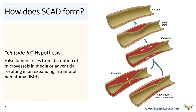How does a SCAD form? One common hypothesis is the so-called outside-in hypothesis. The idea is that there is some injury or disruption of the microvessels within the wall of the blood vessel, either in the adventitia or in the media, that then causes an intramural hematoma to form. If the intramural hematoma remains contained and does not extend along the length of the blood vessel, then you have type 3 SCAD. If the intramural hematoma starts extending longitudinally, then you progress to type 2 SCAD.